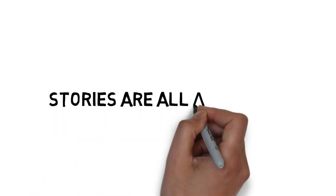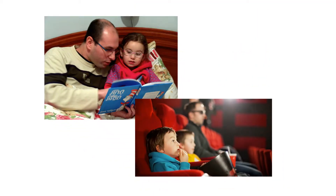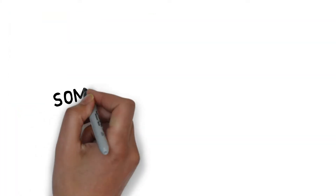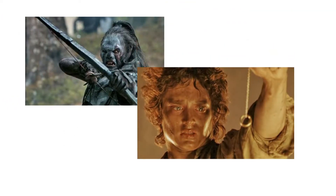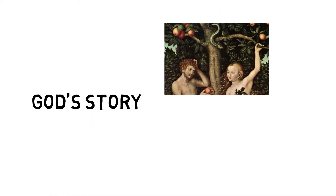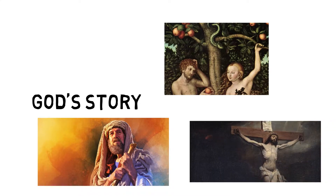Stories are all around us. We tell each other stories about ourselves. We read stories to our kids at night. We watch movies and television shows all the time, and all of these stories have the same general shape — something is wrong and then it gets fixed. That's every single movie you've ever seen: bad things happen, then people try to fix the bad thing. When we as Christians look at these stories, we see that this is also God's story — something bad happens, and then God has been using Israel and Jesus to fix the bad thing.